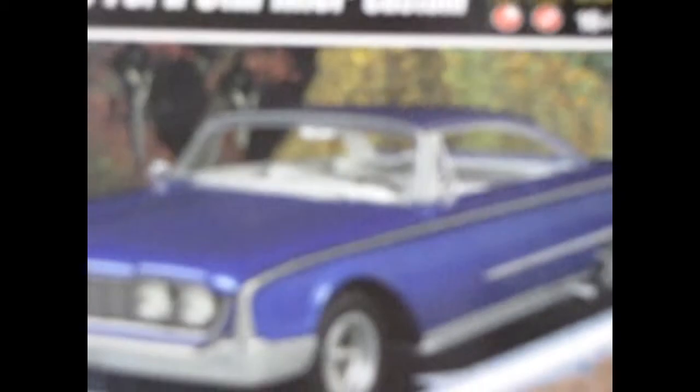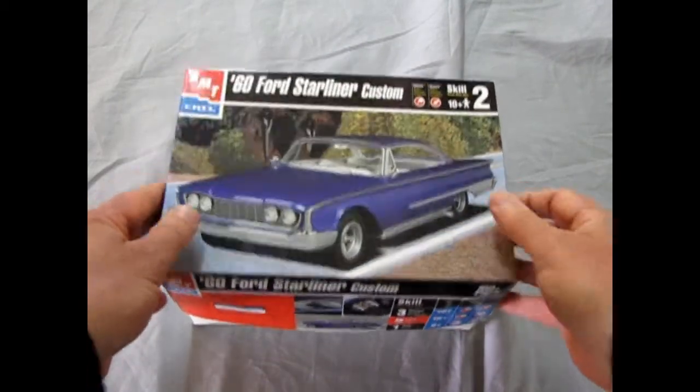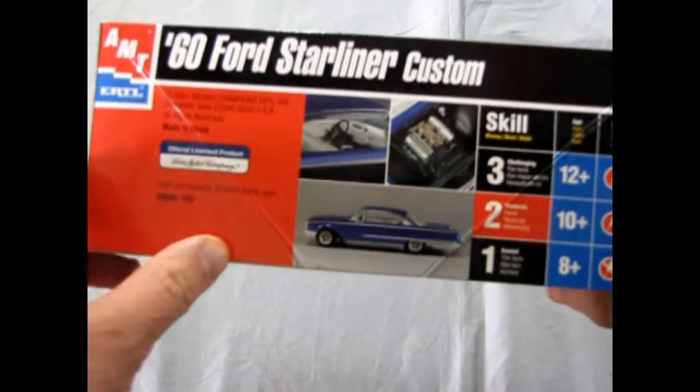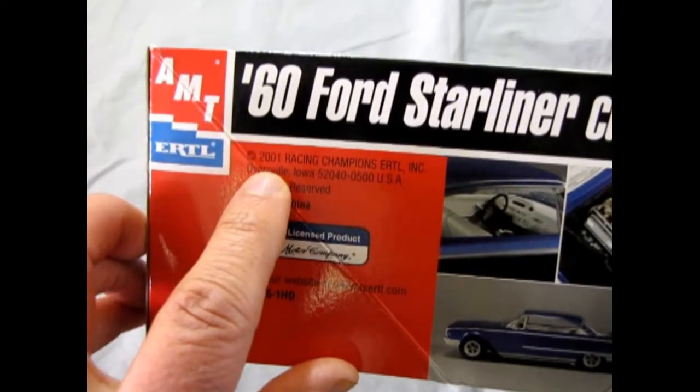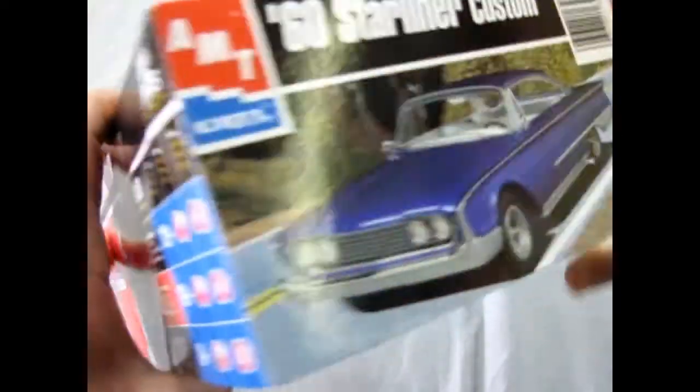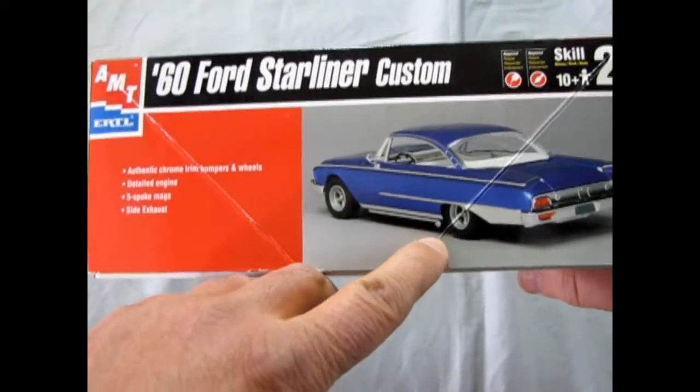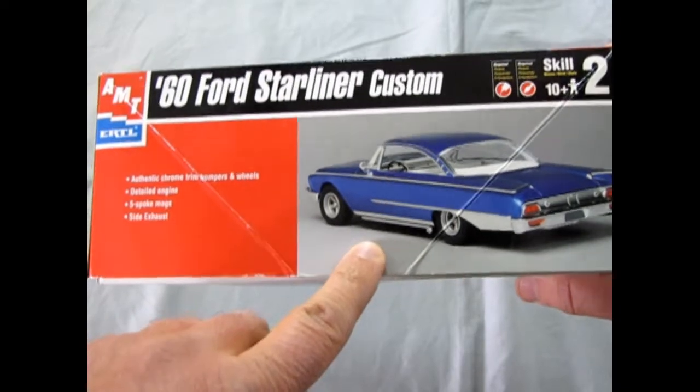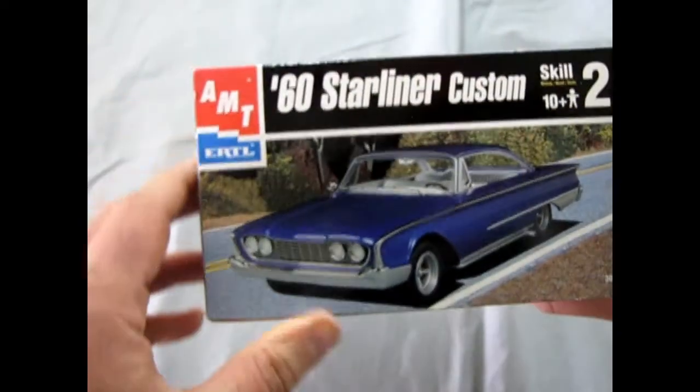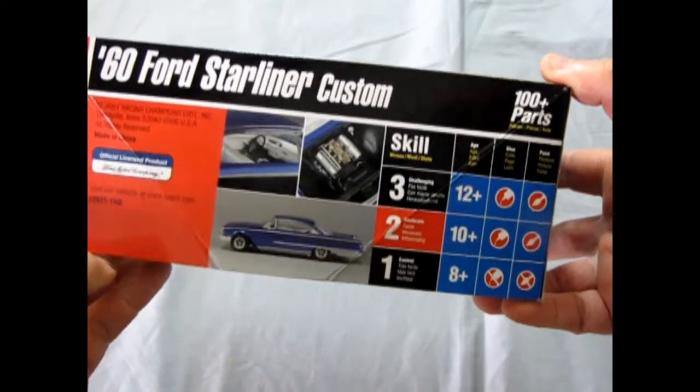So slip back into the time machine to 1960 as we unbox the Ford Starliner Coupe by AMT. Let's show you the box. This is from 2001. The box art is very simple. This is from the RC2 days. You can see the side, rear three quarter and front three quarter and a bit of detail inside. Skill level 2 kit, ages 10 and up.